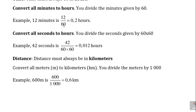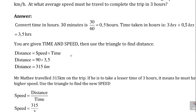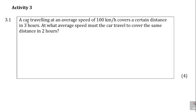We went on to say it's very important to do conversions, and at the same time we looked at an example. Now we're looking at Activity 3, question 3.1. It says: a car traveling at an average speed of 100 kilometers per hour covers a certain distance in three hours. Let's underline what is important. The distance is unknown — we'll call it d — and the time given is three hours.